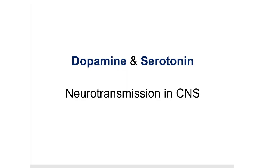In this lecture, let us look at dopamine and serotonin neurotransmission in the central nervous system. Unlike glutamate or GABA which are excitatory and inhibitory neurotransmitters respectively, dopamine and serotonin cannot be classified as exclusively excitatory or exclusively inhibitory neurotransmitters.